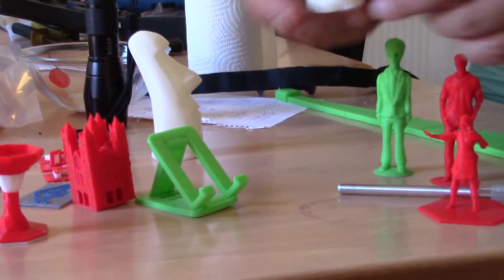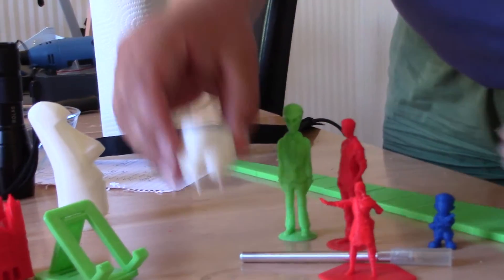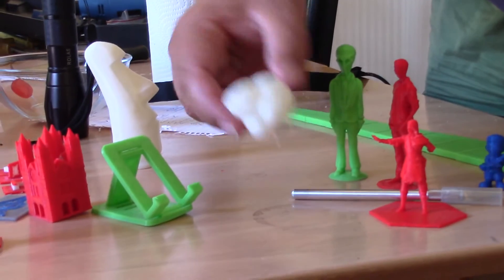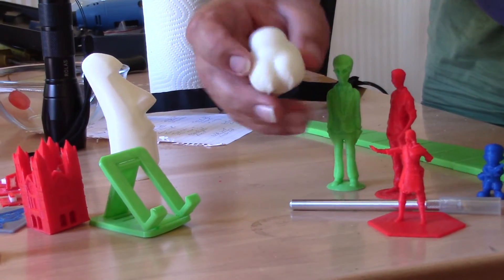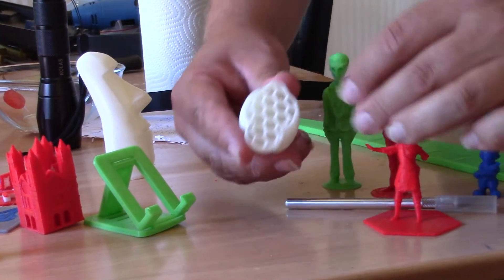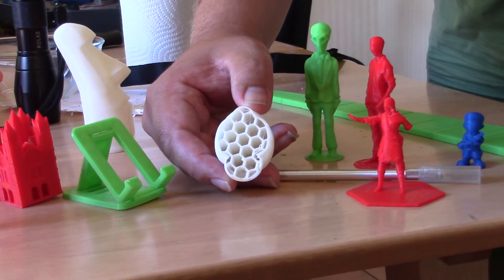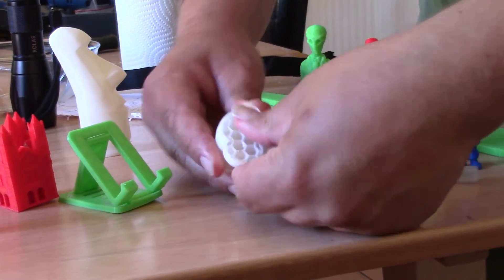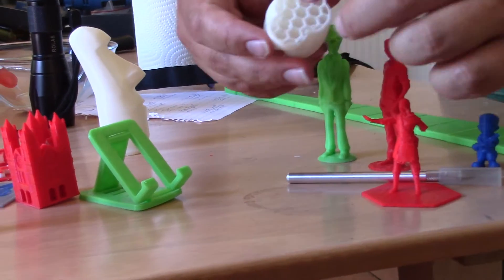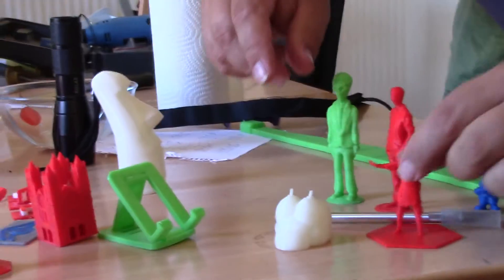Then this, this is the bottom half of a chicken. It should be like that and it ended mid print. It gives me an opportunity to show the honeycomb pattern that it prints in. It's actually quite sturdy and strong. This is in ABS and this is too.